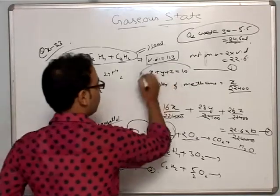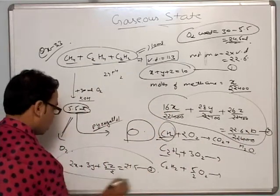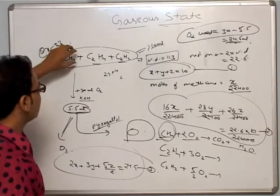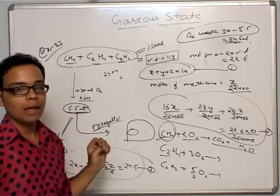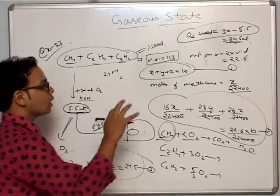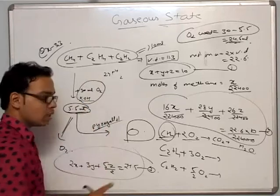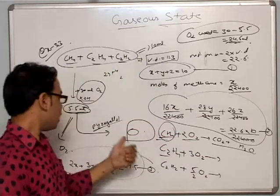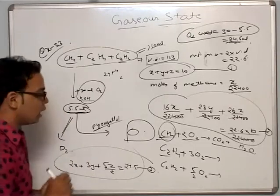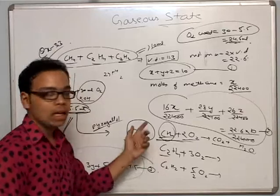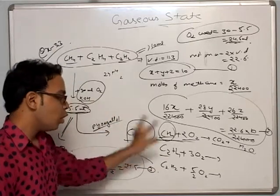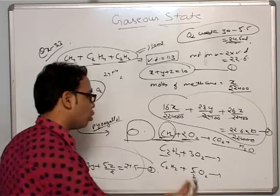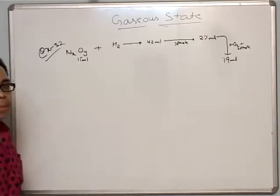So we have 3 equations and 3 unknowns. Solving these gives us x, y, and z — the composition for CH4, C2H4, and C2H2. This was Eudiometry. In eudiometry, we generally use burning reactions and solutions like KOH or Pyrogallol to absorb specific gases, plus the gas law where equal moles occupy equal volumes.